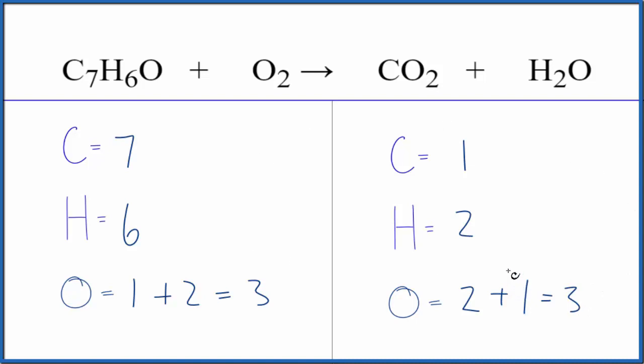At this point, let's just start by putting a seven in front of the CO2. One times seven. That'll give us seven carbon atoms. Those are balanced.